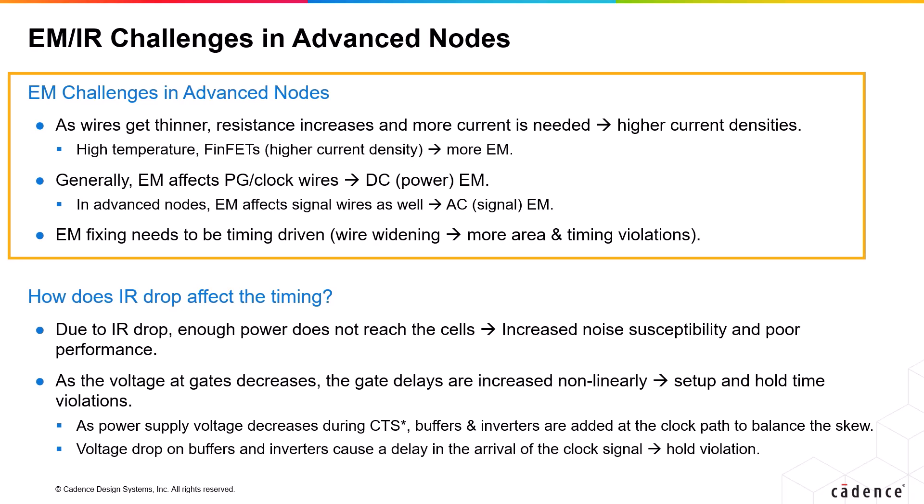How do you fix EM issues? EM fixing also needs to be timing driven. EM mitigation techniques like the widening of wires can increase the area, as well as lead to timing violations.